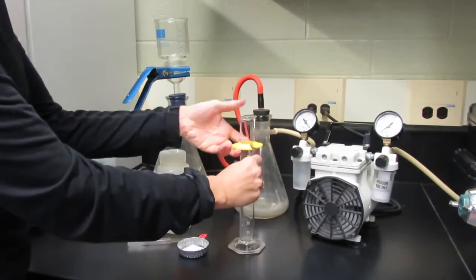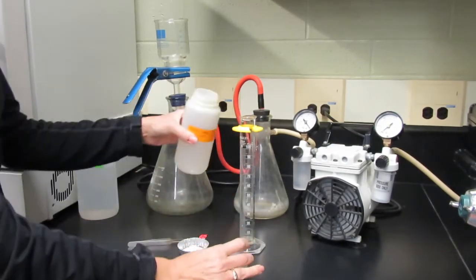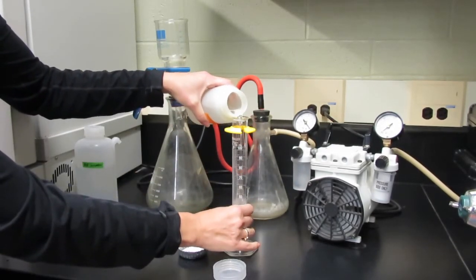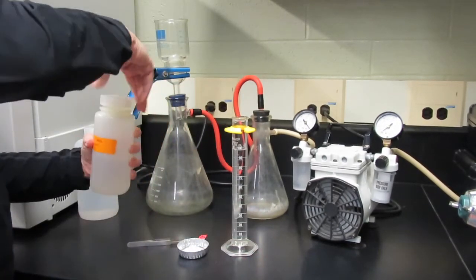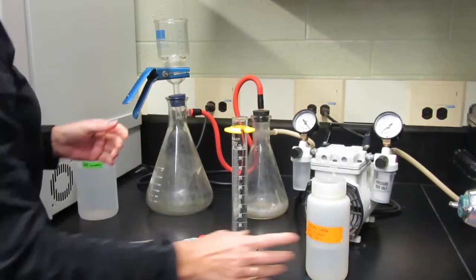For the water sample, shake it and pour 100 milliliters into the graduated cylinder. If the sample is really dirty or mucky you can dilute the sample. We do this so we don't burn out the motor.